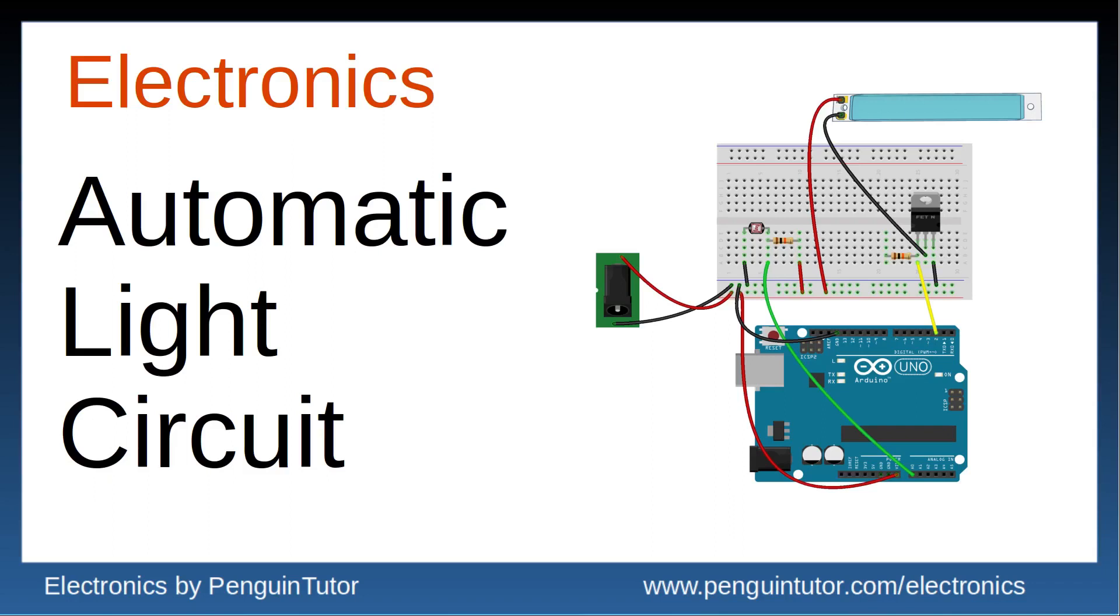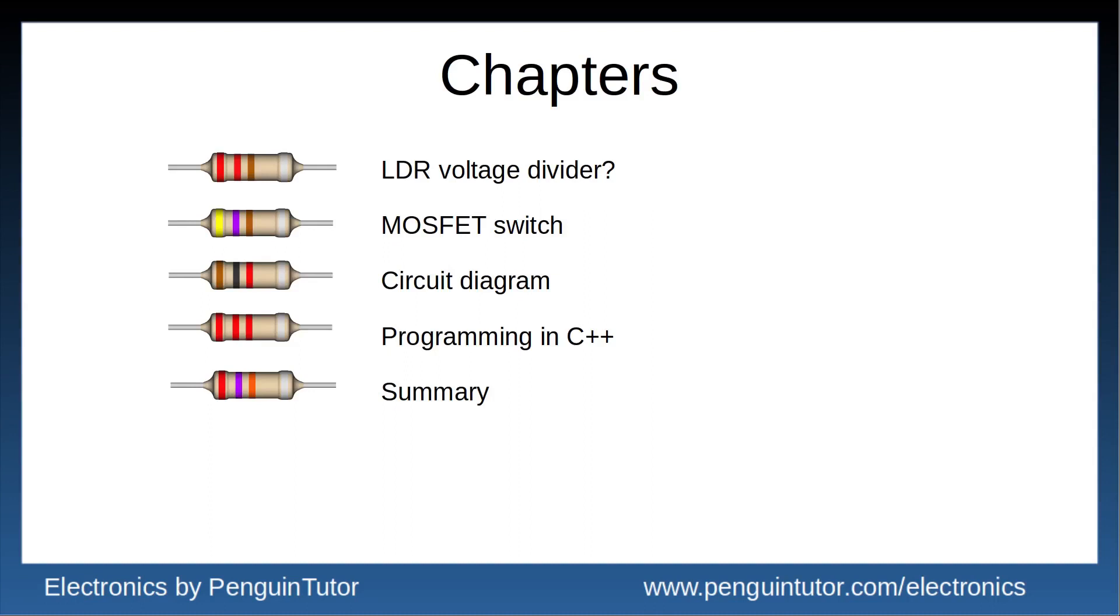So this is what I'll be covering in the video: first, a quick recap on the voltage divider and how an LDR can be used, then an explanation of the MOSFET switch which can be used to switch high loads. I'll then provide the circuit diagram—or in this case, it will be a breadboard layout—then programming in C++, including how I used different on and off thresholds to prevent the light from flashing, and finishing with a demonstration and summary.